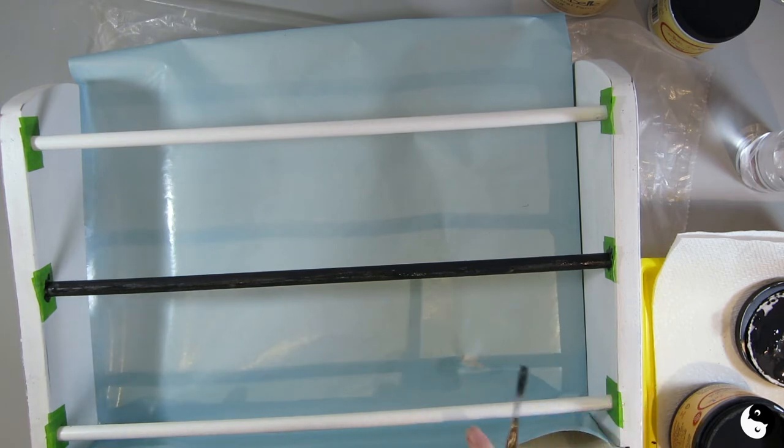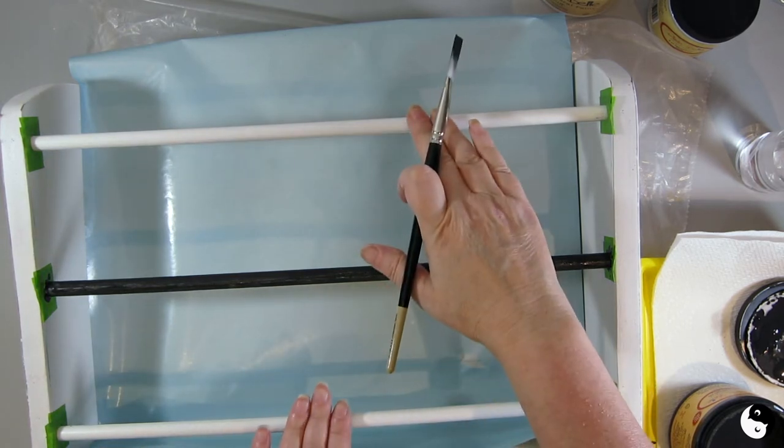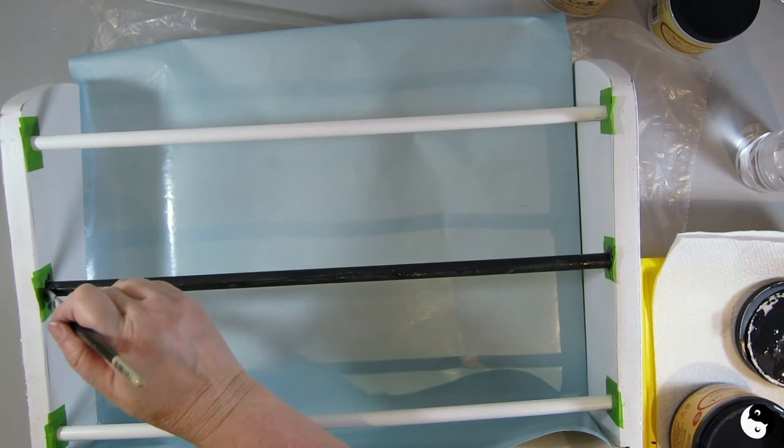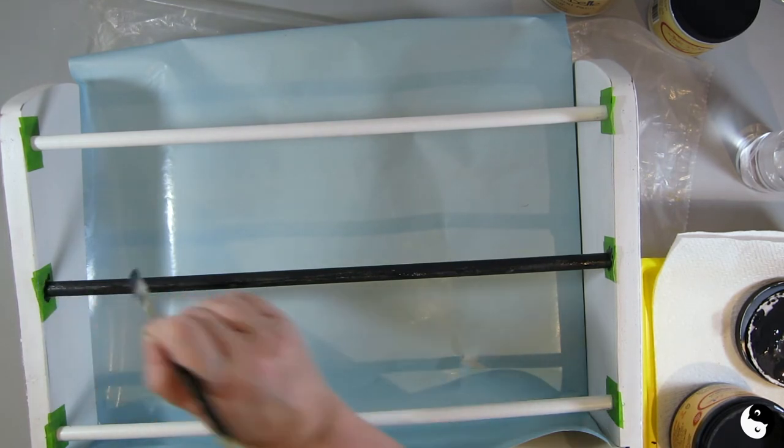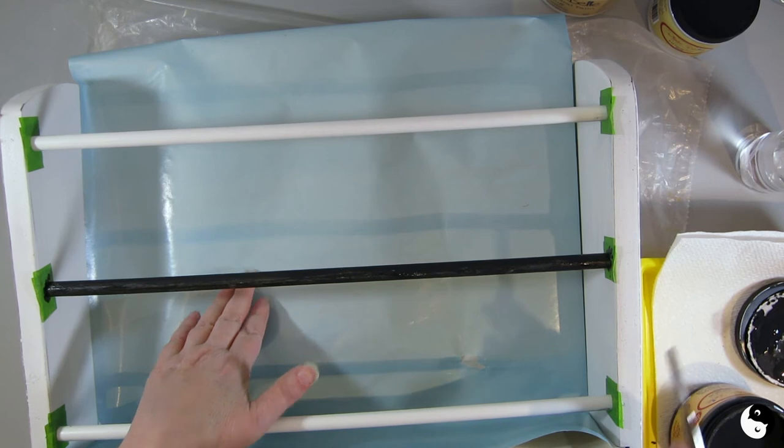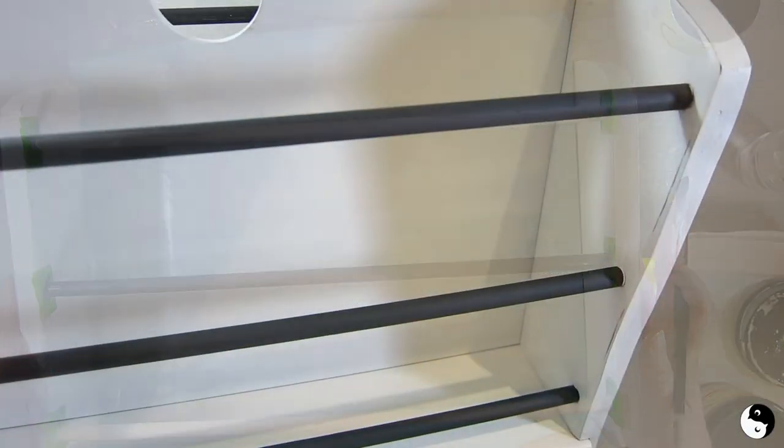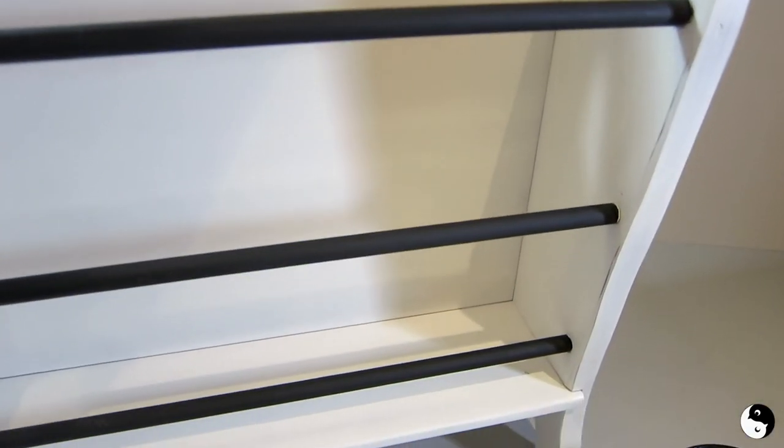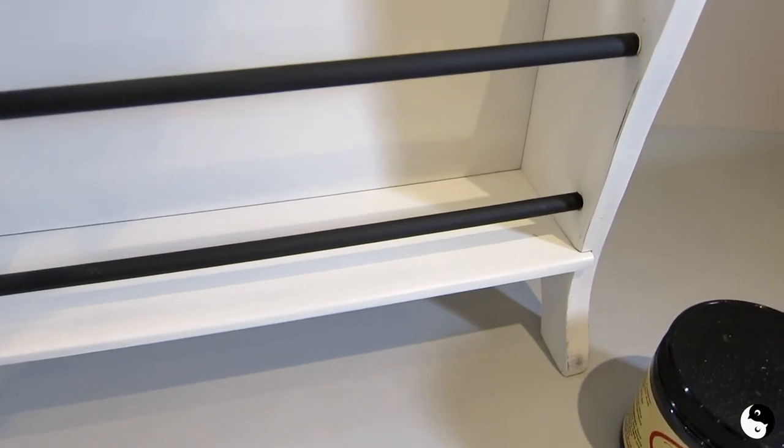I think what I'm going to do from here is wrap the spindles up once they're dry and then paint the inside and then move to the outside. After removing the tape, you can see I have nice clean edges at the end of these dowels.